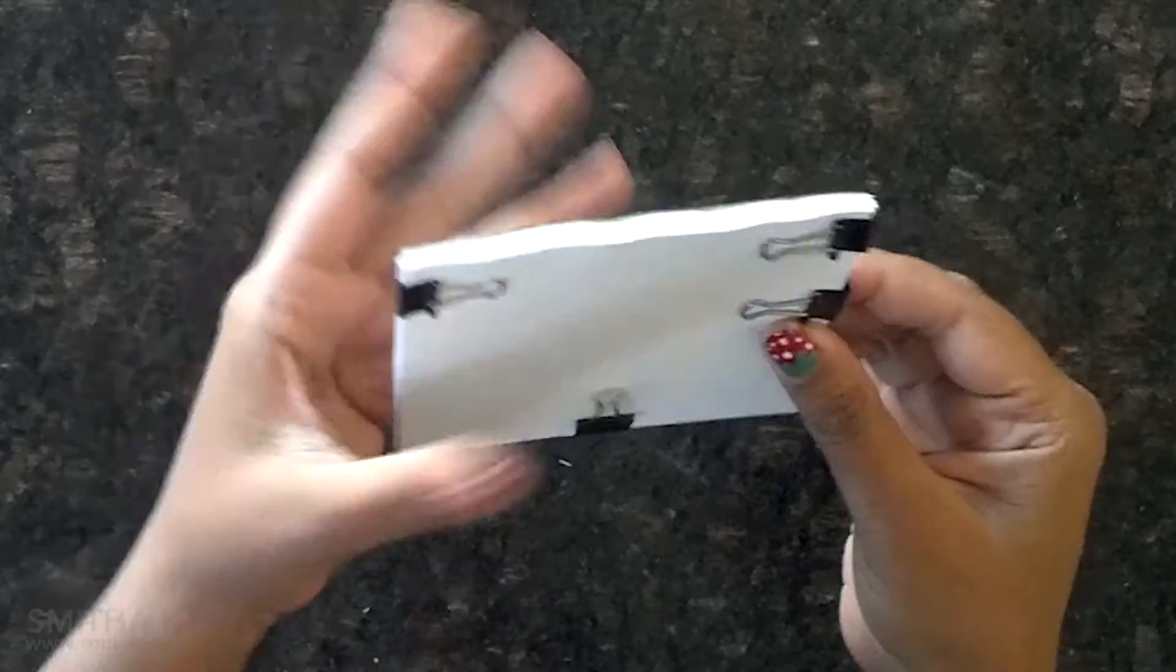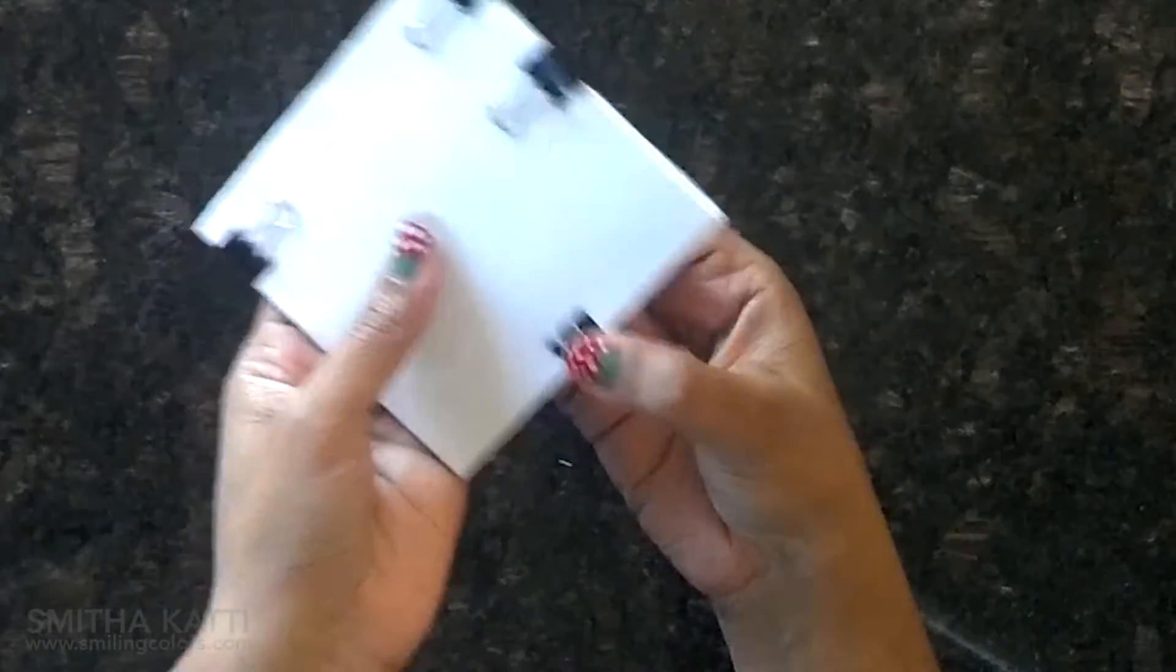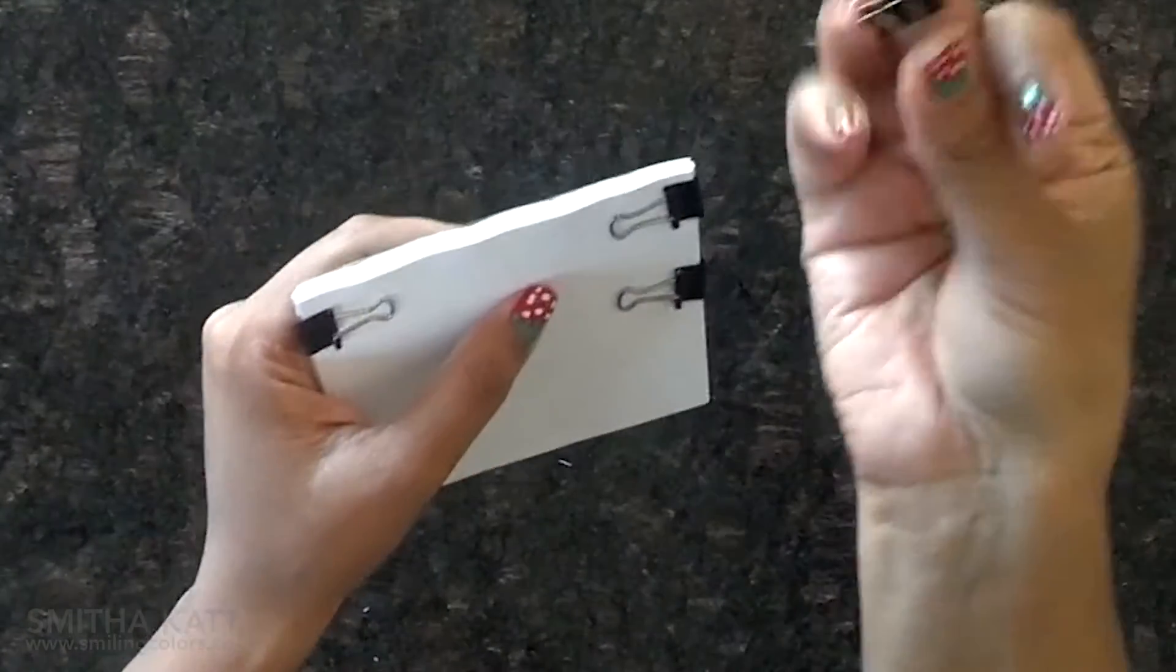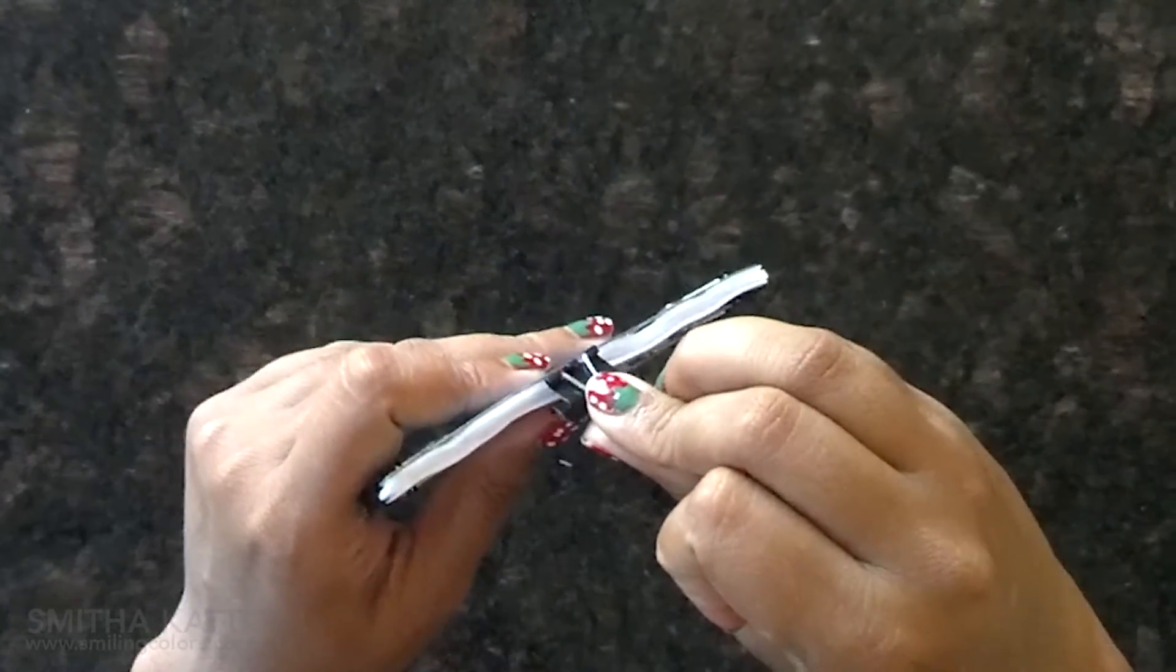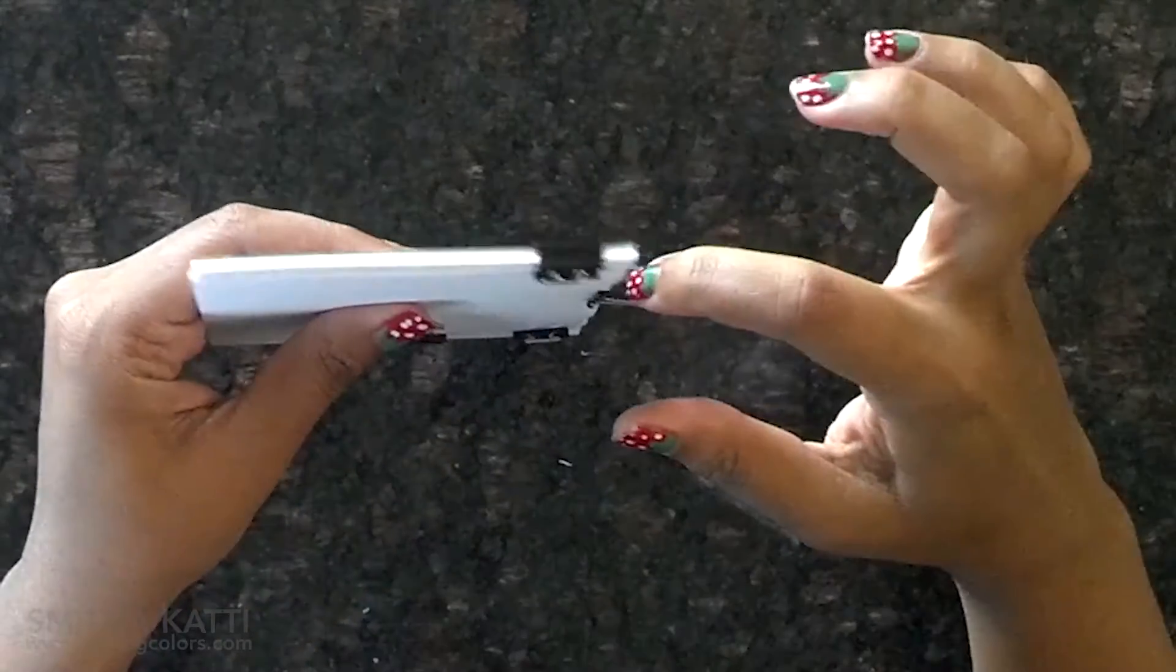after about 15 minutes of drying, I noticed that the paper was warping and forming little waves. So what I did was I moved the binder clips onto the glued edge making sure that the binder clips didn't actually touch the glue by giving a small gap there.